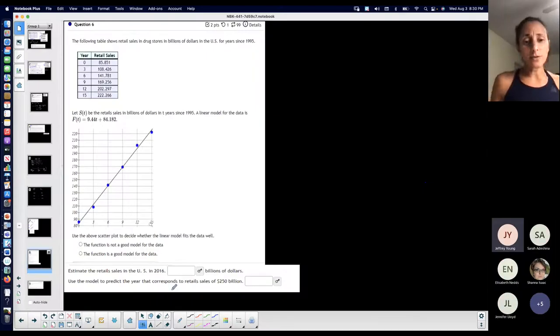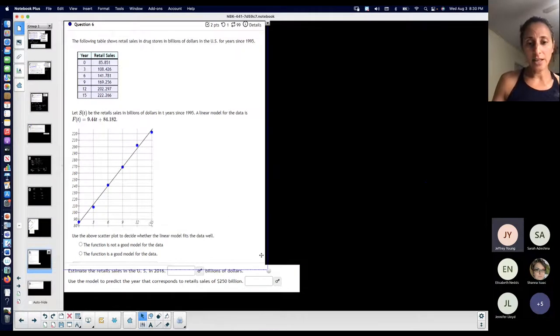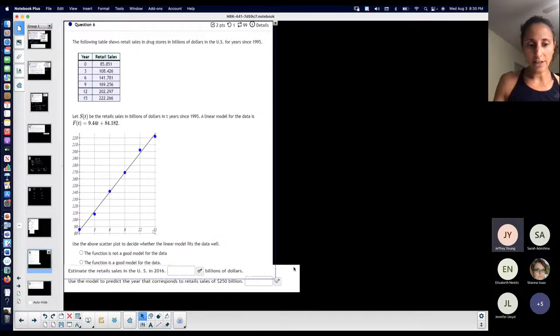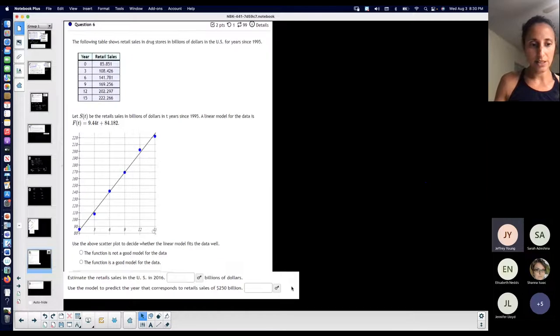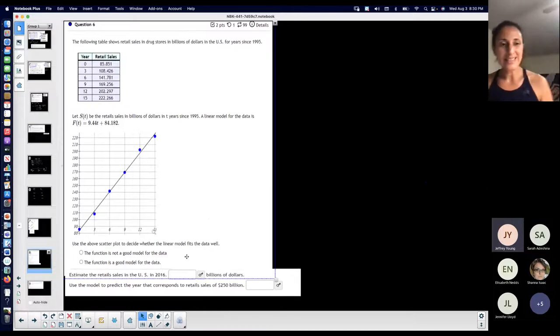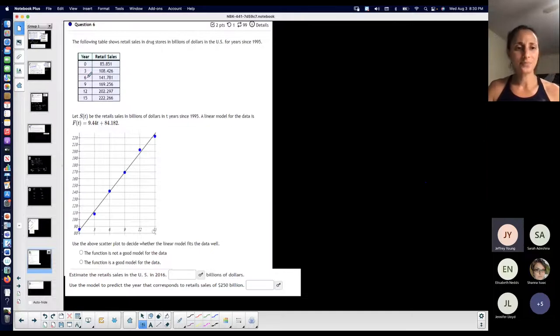So this one's question 6 from the first homework. And again, I don't really need my graphing calculator for this because everything is pretty much given to me. Let's see what they want me to think about here. So look at this. This is a small table. There's not a crap ton of data for this.